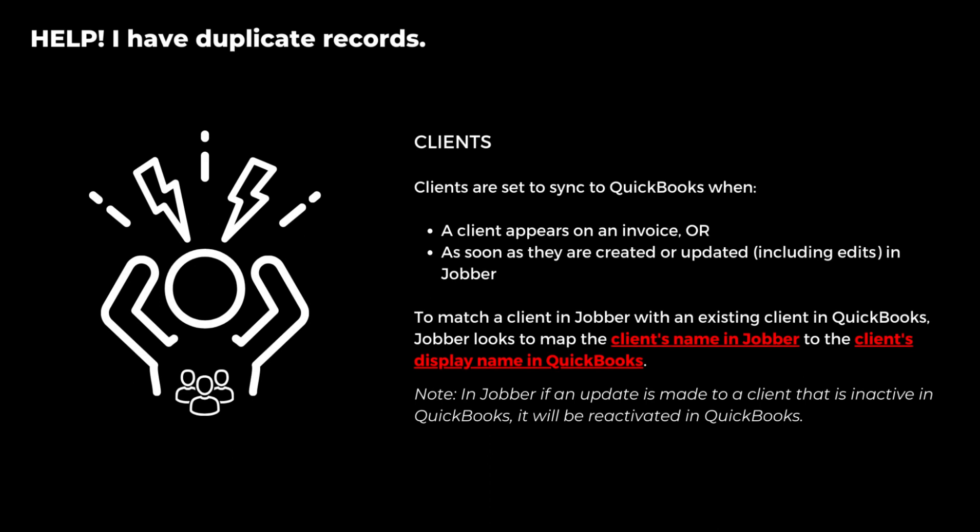One of the biggest concerns that most people have when syncing their information between Jobber and QuickBooks is the duplication of records — clients is the most common issue. When syncing clients between Jobber and QuickBooks, it's important that the information matches exactly, specifically the company name or the individual's name, because that's what's used to determine if the record already exists. Otherwise you will end up with duplicate records.